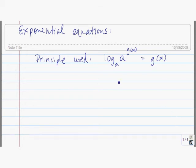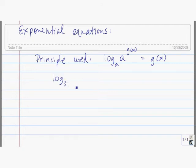The principle that we use when solving exponential equations is that log base a of a to the g of x is equal to g of x. One way to think about why this is true is that log base a of x and a to the x are inverse functions. For example, log base 3 of 3 to the 2x plus 1 is equal to 2x plus 1.